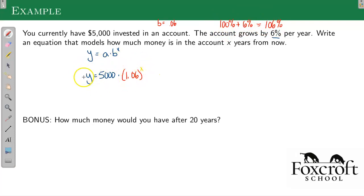So this is the formula for how much money you would have. Just as a kind of bonus, what would you have after 20 years? Well, X represents the number of years, so this would be 5,000 times 1.06 to the 20th. Again, not something you could pretty much ever do in your head, so let's just put it in the calculator. 5,000 times 1.06 raised to the 20th. If you do that, you get 16,035.68.